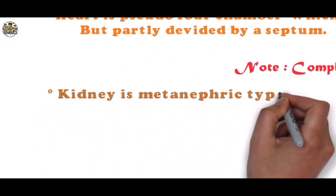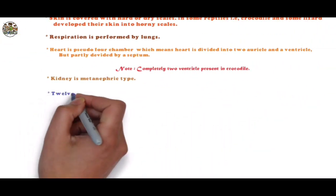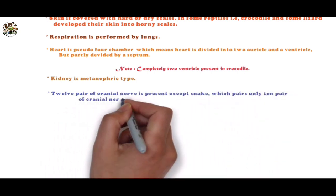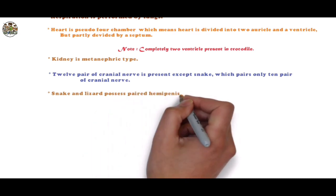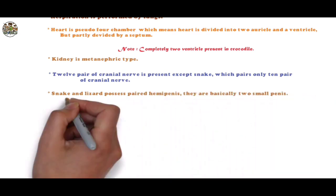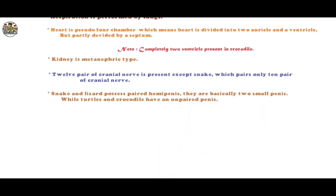Kidney is metanephric type. Twelve pairs of cranial nerves are present except in snakes, which have only ten pairs of cranial nerves. Snakes and lizards possess paired hemipenes, basically two small penises, while turtles and crocodiles have an unpaired penis.